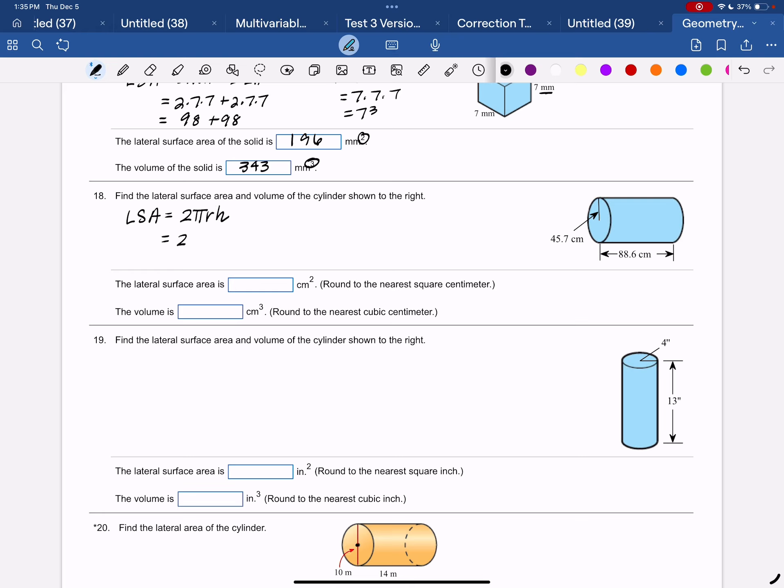So it's 2. Now notice they did give us the radius because they gave us half. And then our height, even though it's lying on its side, our height is 88.6.